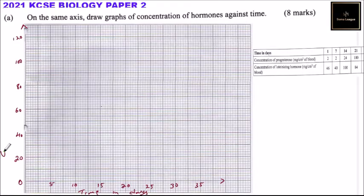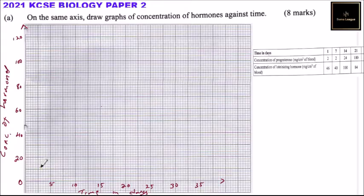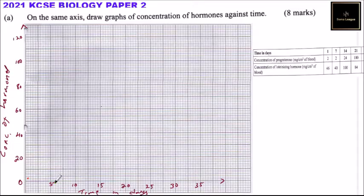The y-axis is labeled 'concentration of hormones in milligrams per centimeter cube of blood.' Now plotting progesterone: at day one it was 2, at day seven it was also 2. One small square represents one unit on this scale, so day seven progesterone is plotted at 2.